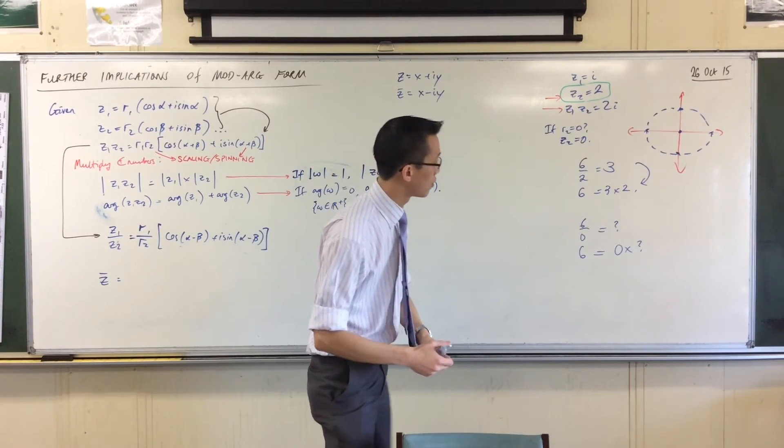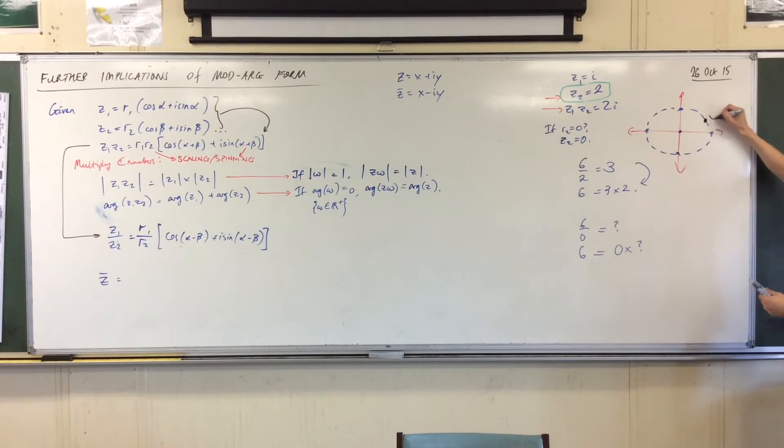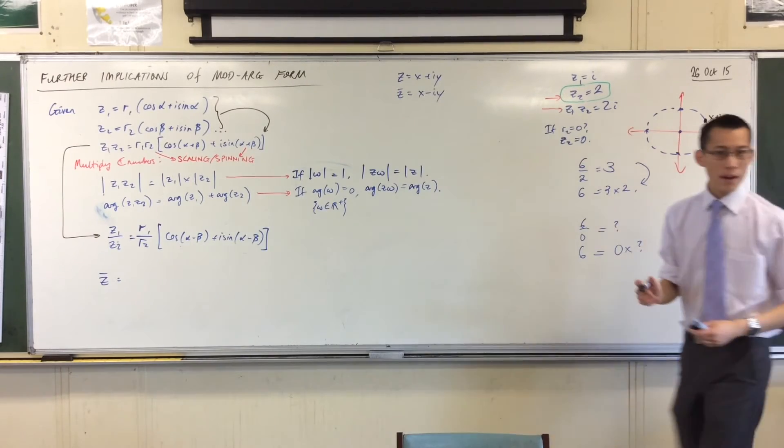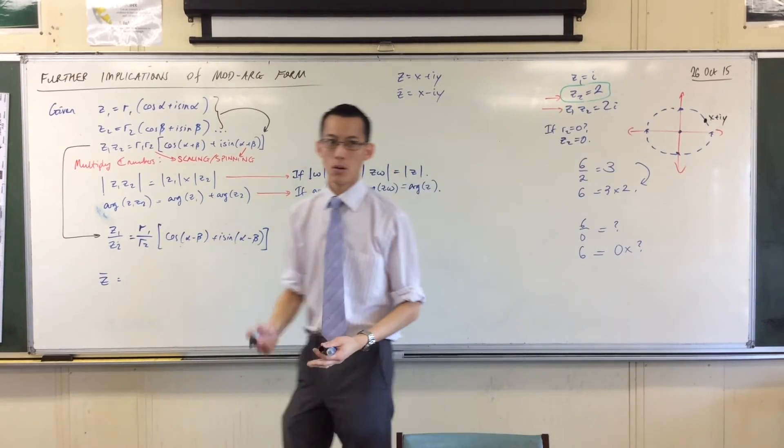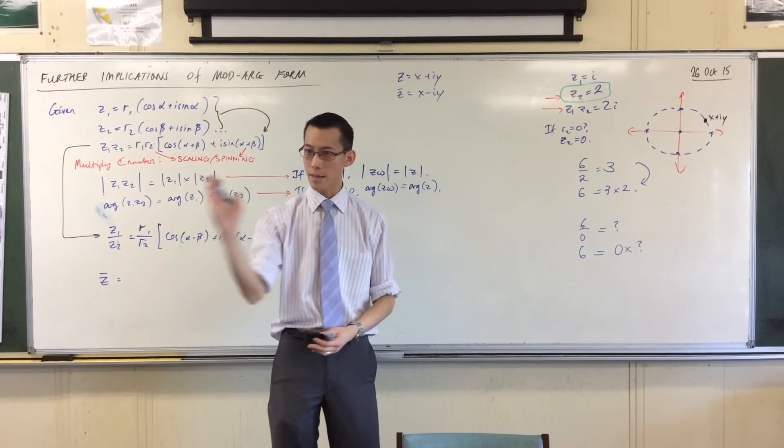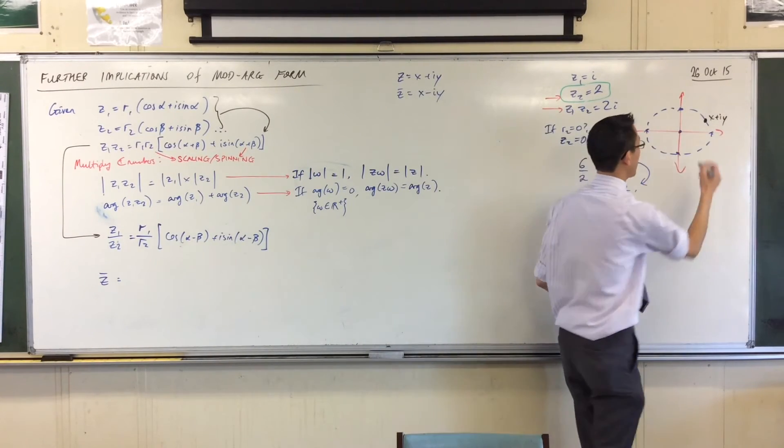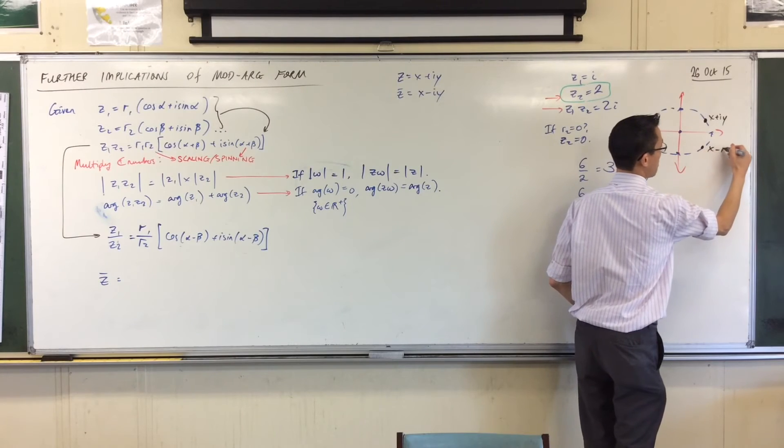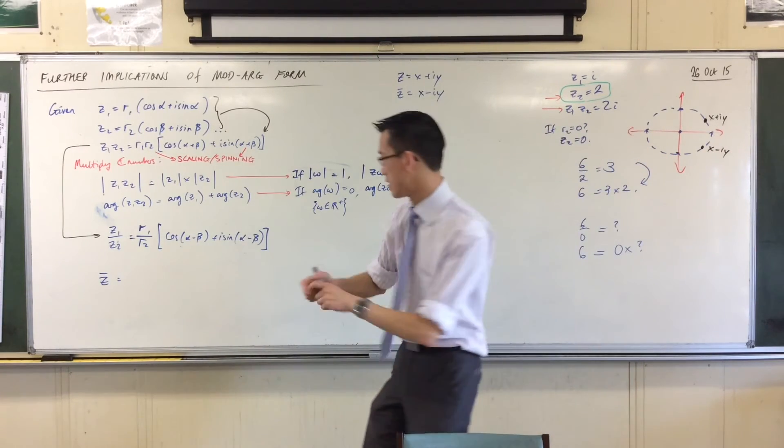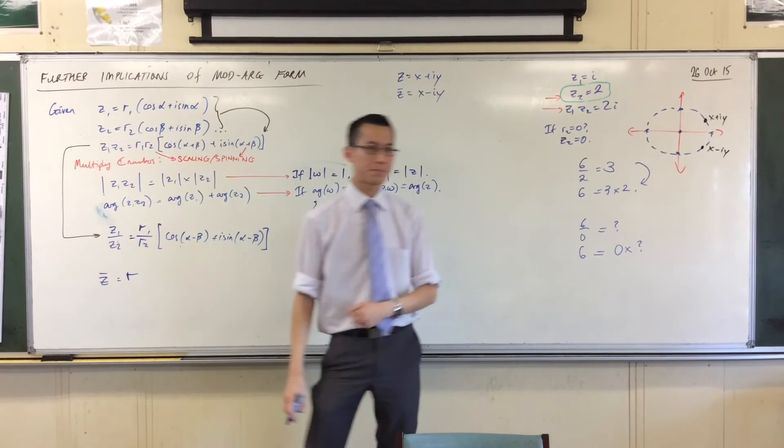Okay? So, for example, if I put onto here, let's put x plus iy there. Where is x minus iy? Well, the real number is still the same, so horizontally it's still the same. But I've reflected across the real axis, right? So, here I am at x minus iy, right? So, the modulus is still unchanged. It's just going to be r, right?